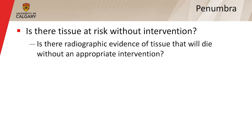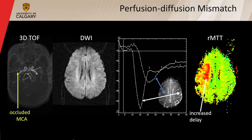Penumbra — the fourth P — is the risk to tissue without intervention. We're looking for radiographic evidence of tissue that will die without appropriate intervention. We combine perfusion and diffusion imaging. In this patient with an occluded MCA on the right side, the DWI doesn't show a very robust light bulb. We can do the contrast experiment and see on the left side a robust MR signal response, but on the right side a much more muted response. We calculate parametric maps and see a large region of mean transit time delay — a mismatch between perfusion and diffusion deficit. This is the penumbra: tissue at risk identifiable by MR.